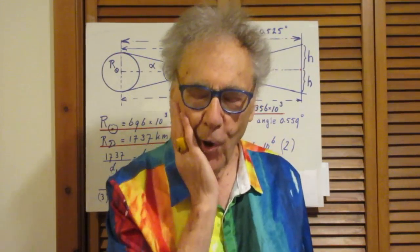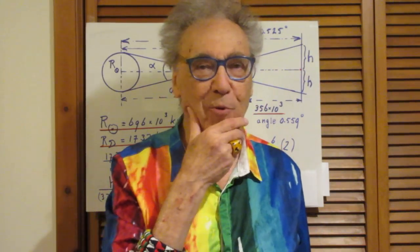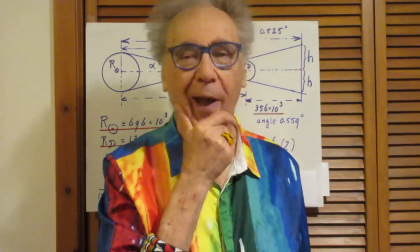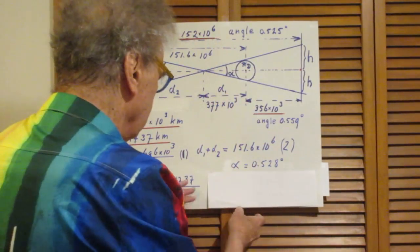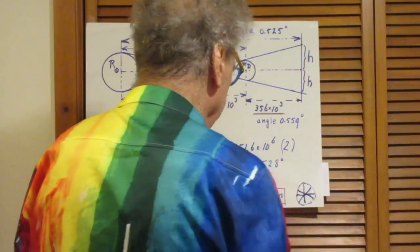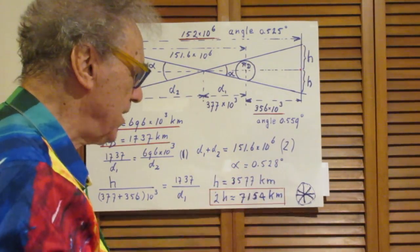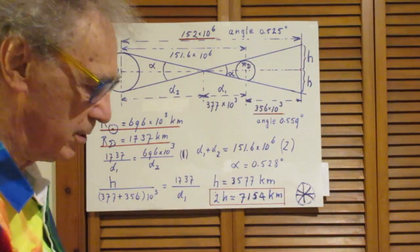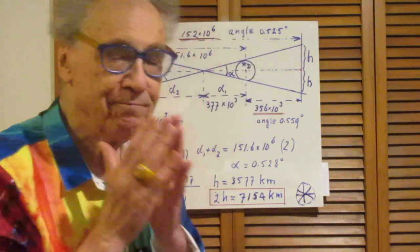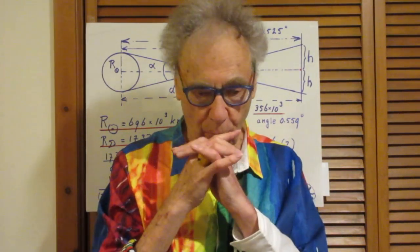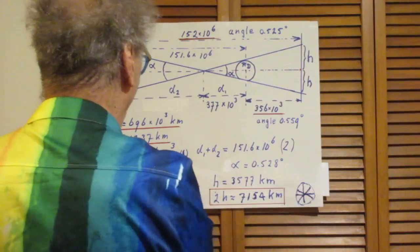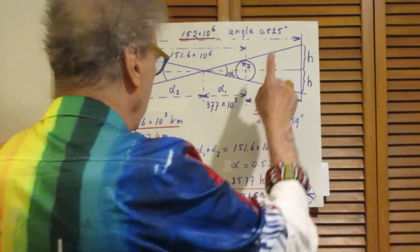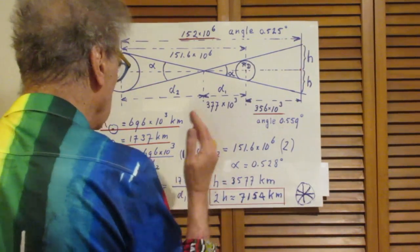Okay, now comes an embarrassing moment for me. Why am I re-taping this? I'll be very honest with you. This was my result. H was 3577 kilometers, and therefore 2H was 7154 kilometers. I had no reasons to doubt that. I checked my calculations up to this point several times, and I found the same thing. Listen to what I said. I checked my calculations up to this point several times.